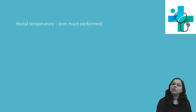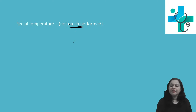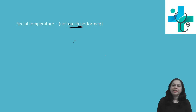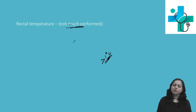Next is rectal temperature. Rectal temperature is not much performed, but it reflects the core temperature more accurately. It is nearly 1 degree Celsius more than oral temperature.